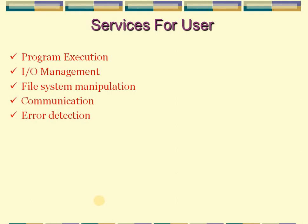Services are further divided into two categories: one for the user and the other for the operating system itself. The services which are used for the user are: program execution, input/output management, file system manipulation, communication, and error detection. Now we will see these user services one by one in detail.